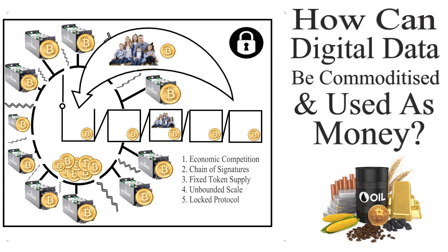To recap: a commoditized data network must be economically competitive. There must be a chain of digital signatures for common accountability, so that users of the network are accountable to one another rather than a centralized third party. There must be a fixed supply of tokens, there must be unbounded scale, and the protocol must be locked.